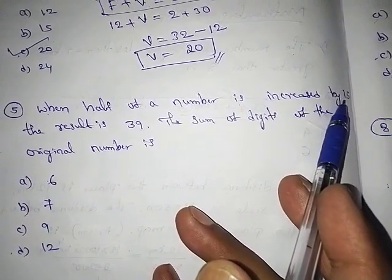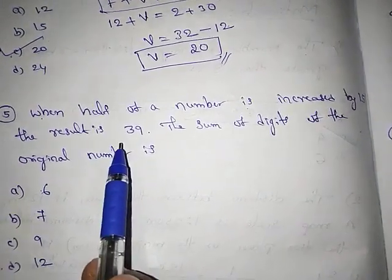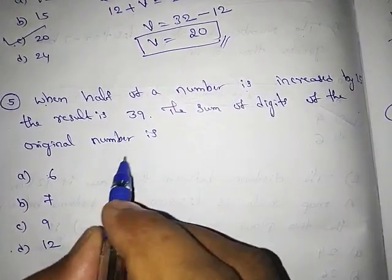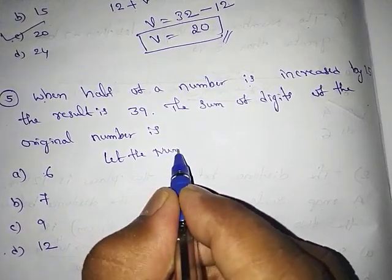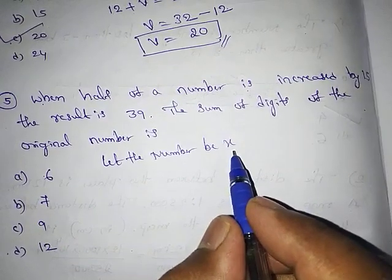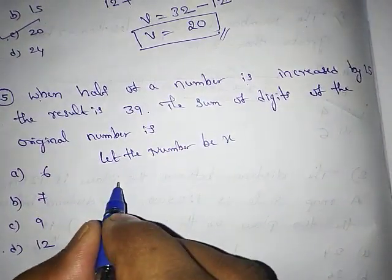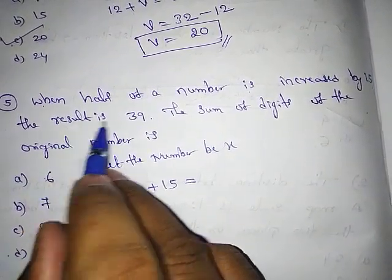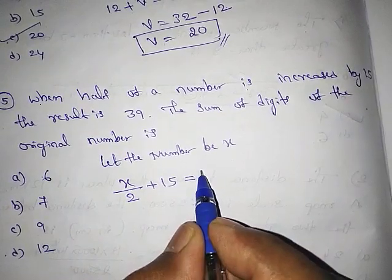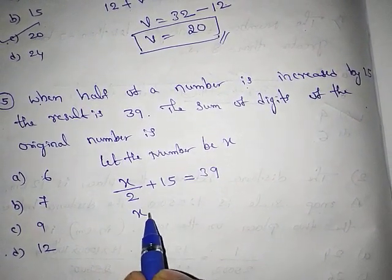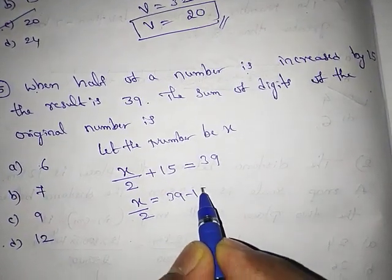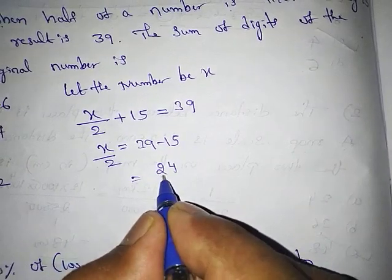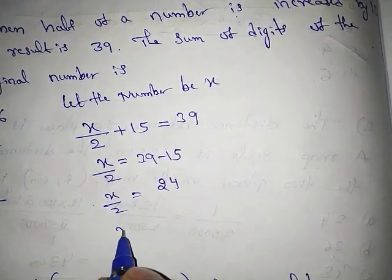Next question: when half of a number is increased by 15, the result is 39. The sum of digits of the original number is? Let the number be x. Half of x increased by 15 equals 39: x/2 + 15 = 39. So x/2 = 39 - 15 = 24.